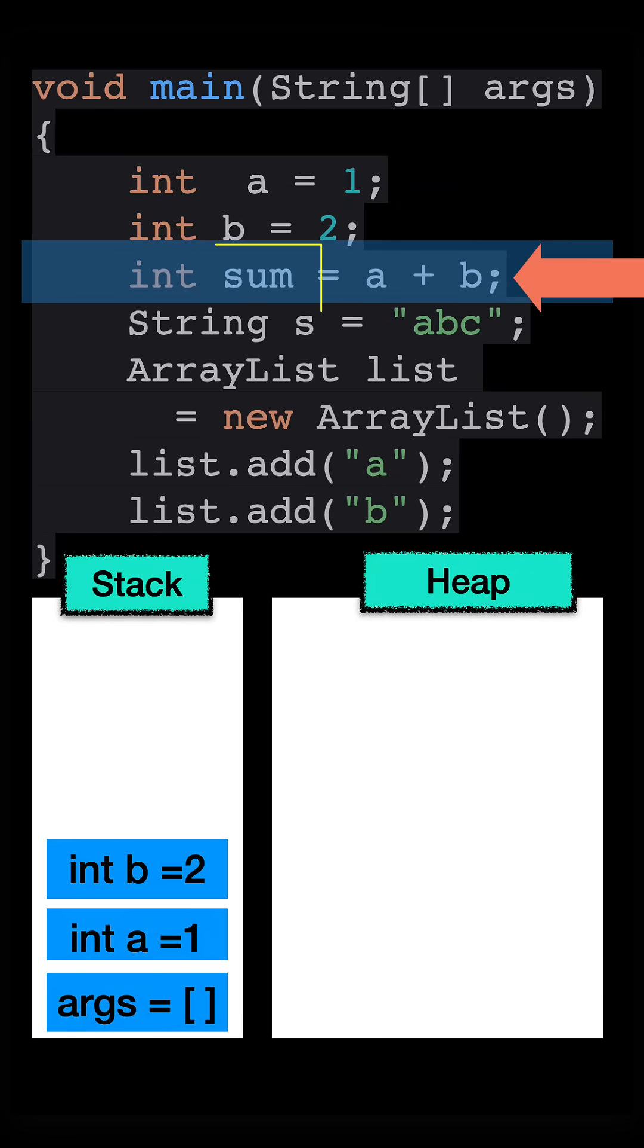Now time for another local variable called sum, which stores the addition of a and b. So this goes into the stack as well.